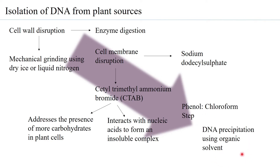After ethanol precipitation, the DNA is resuspended in an appropriate buffer, generally Tris-EDTA (TE) buffer or water. The DNA is then checked for quality and quantity. Quality is measured by the A260/A280 absorbance ratio; a ratio of 1.8 indicates a pure DNA sample. Since DNA absorbs light at 260 nm, the absorbance value also allows calculation of the amount of DNA isolated.